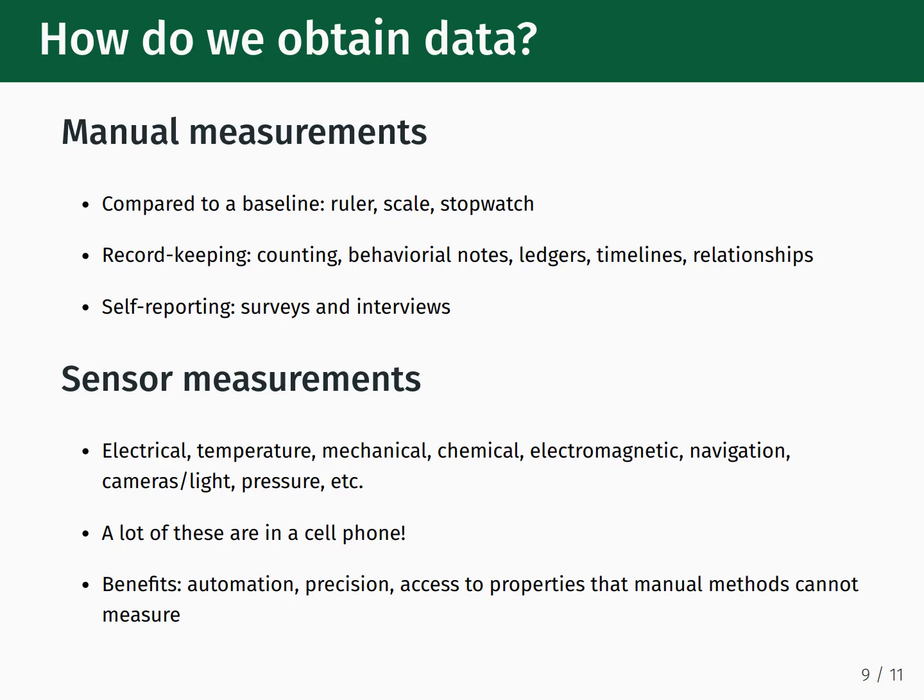The next class of measurements are sensor measurements, and there are many different types: electrical sensors, temperature sensors, mechanical sensors, chemical sensors, electromagnetic ones, navigation sensors, cameras and light-based sensors, and pressure sensors. The thing that unifies all of these is that they're detecting some sort of change in the environment. It should also be noted that many of these sensors can be found in your cell phone. Many benefits of sensor-based measurements over manual measurements include that data collection is far more automated, far more precise, and gives us access to properties that manual methods just cannot measure.